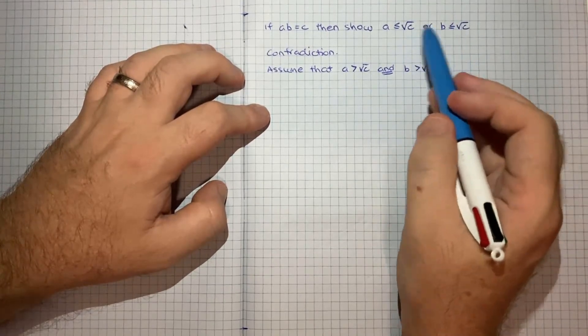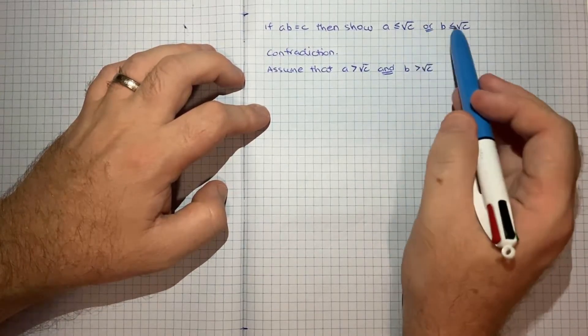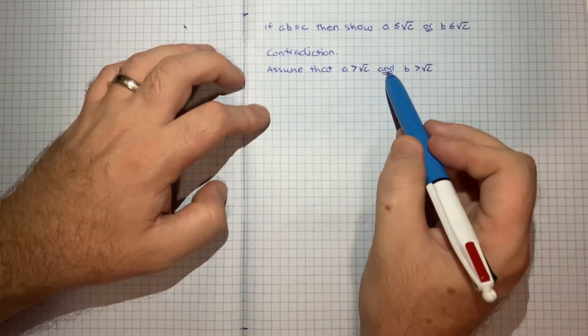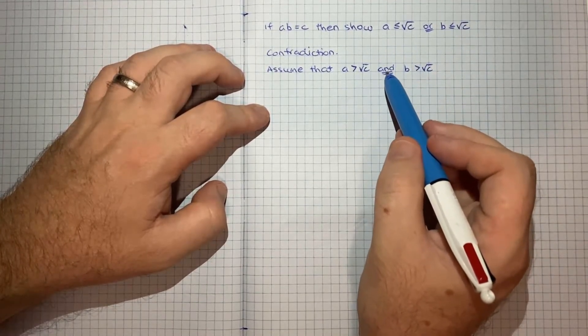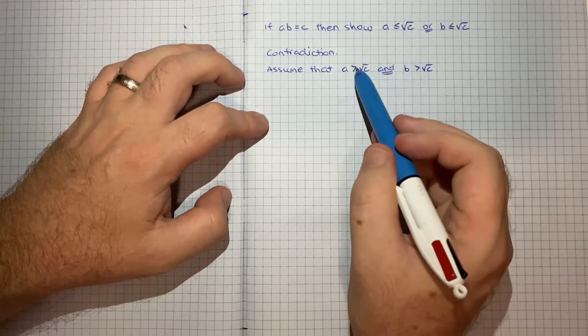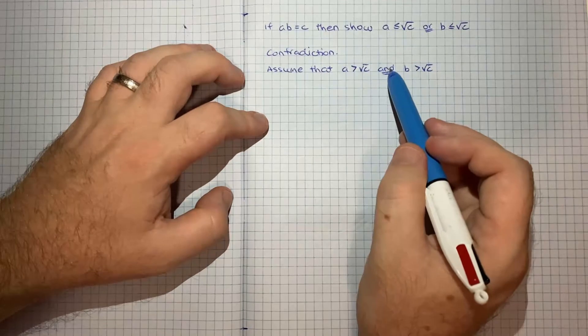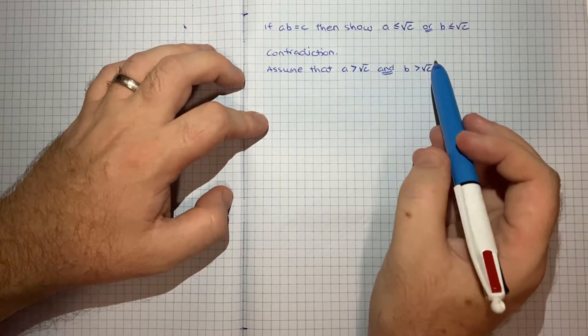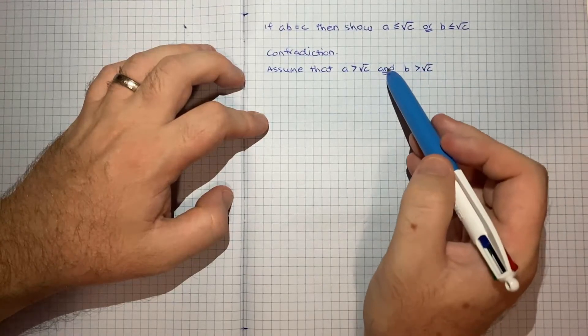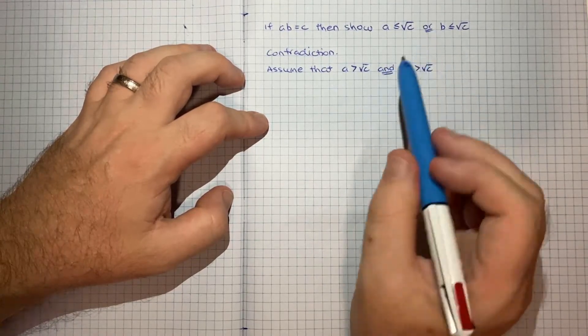So these two conditions being either one of them, the opposite of that is the opposite of the individual conditions and saying that they both have to be true. So that's the assumption we have to make and perhaps that's where you could make your first mistake by assuming the opposite but still keeping your or. It needs to be and for it to truly be the opposite.